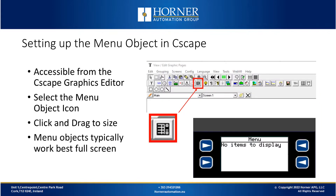Now let's look at how we set up the menu object in Seascape. In the Seascape graphics editor, go to the icon toolbar and select the menu object icon. Then click within the screen area of your editor and drag that window to size. The menu object always works best when it's full screen — that is, when it's the only object on the screen. Stretch it to full screen using the handles, then double-click the menu object to open the main dialog box.